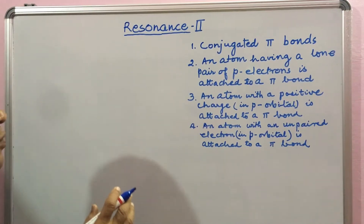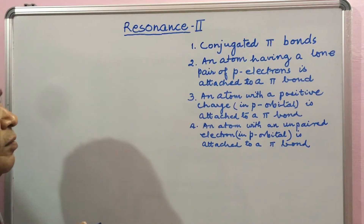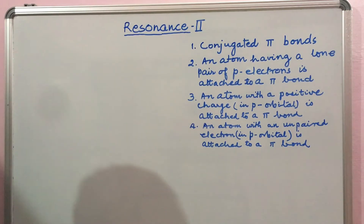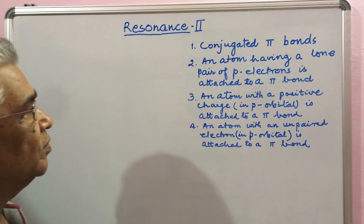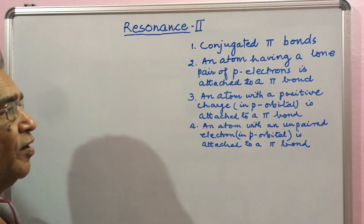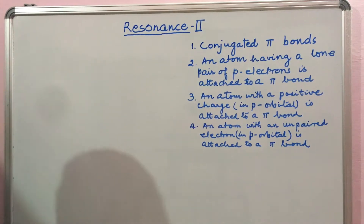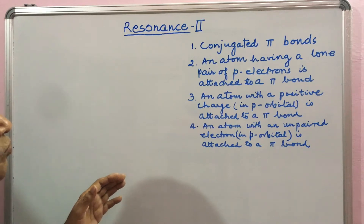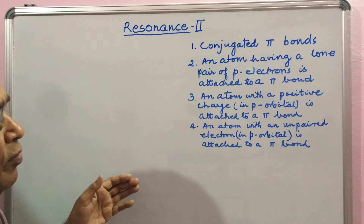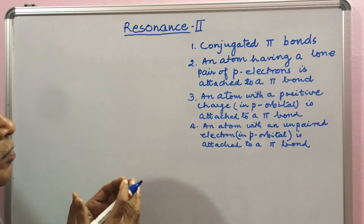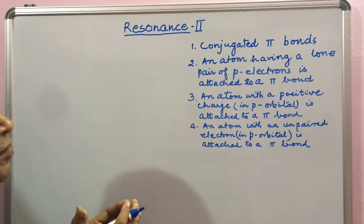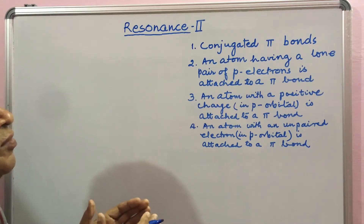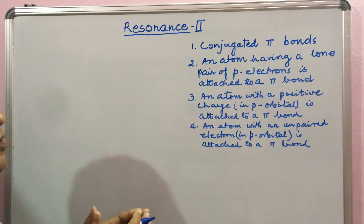In the last video, we saw the delocalization of Pi MOs expressed as resonance in the valence bond representation. Today we will see how to know by looking at a valence bond structure whether resonance is displayed in it or not.